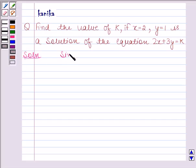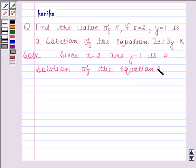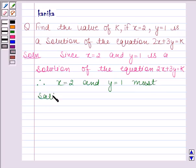Since x equals 2 and y equals 1 is a solution of the equation 2x + 3y = k, therefore x=2 and y=1 must satisfy the equation 2x + 3y = k. Right.